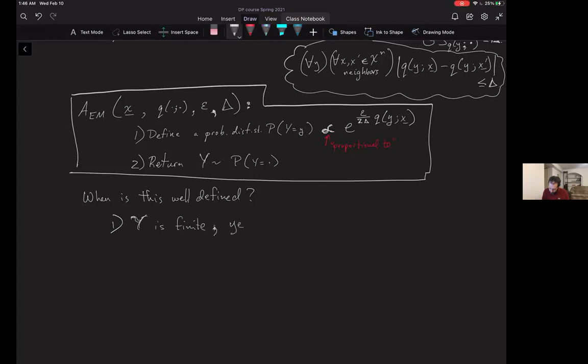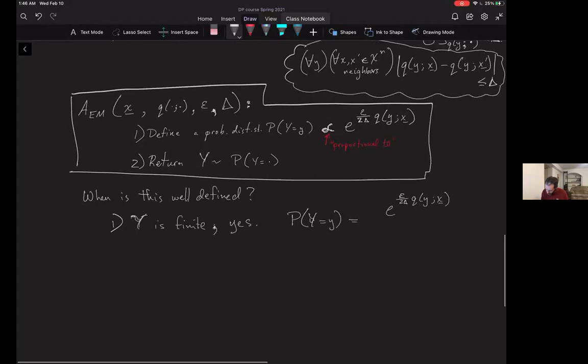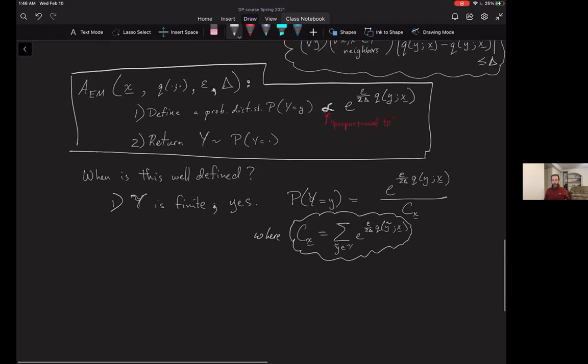We can define the probability that Y equals little y to be simply e^(epsilon/(2*delta) * q(y,x)) divided by a constant c, where c is just a constant that makes everything add to 1. So c is just the sum over y tilde of e^(epsilon/(2*delta) * q(y_tilde,x)). When the set Y is finite, then this constant always exists and we can always define this probability distribution.